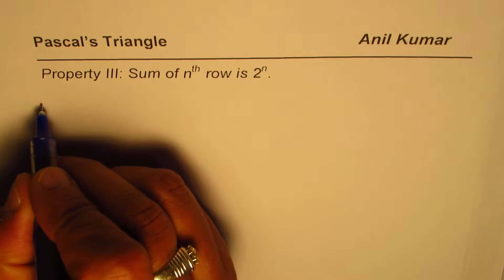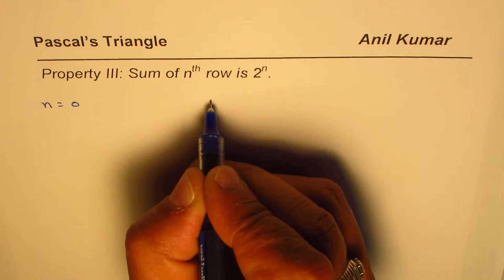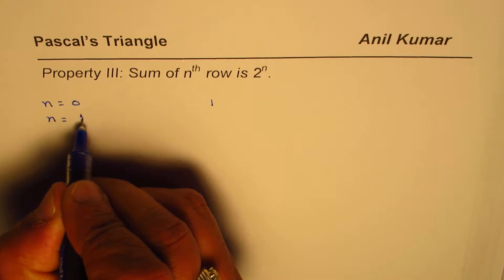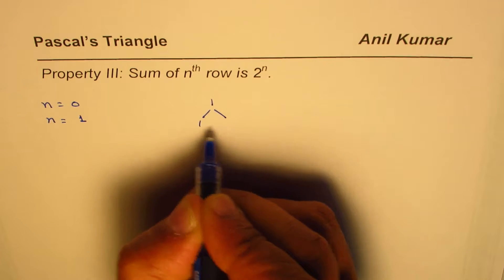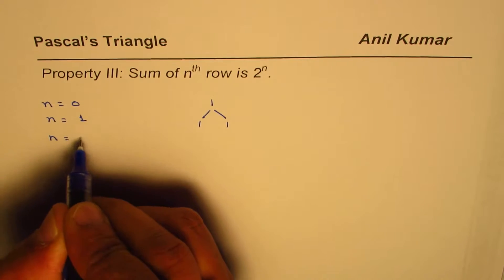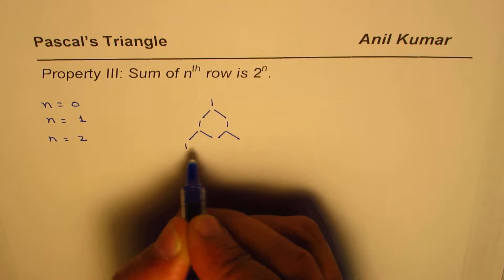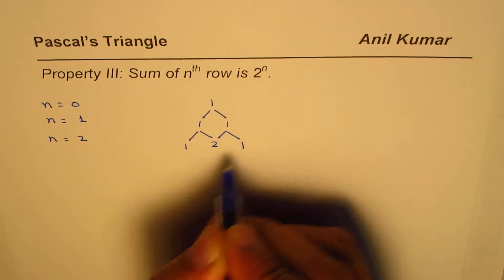So if row number n equals 0, then in Pascal's triangle we have an entry 1. If n equals 1, then we have 1 and 1. If n equals 2, then we get the second row where the entries are 1, 2, and 1.